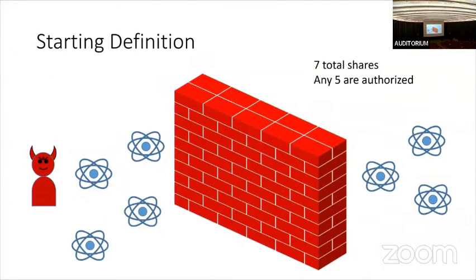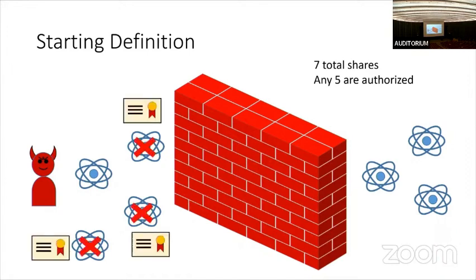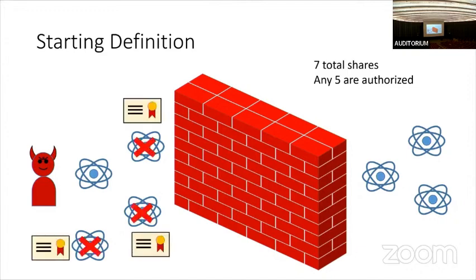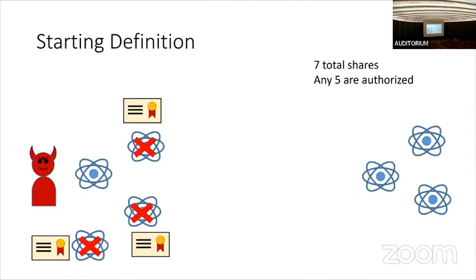Let's see if we can adapt this to the secret sharing setting. We split our secret into some number of shares — say seven shares where any five are authorized and can come together to reconstruct the secret. The left side of the wall is similar to the ciphertext and the right side, inaccessible to the adversary, is similar to the key. The adversary deletes some of the shares it has access to by producing valid certificates, and if it deletes enough, the wall comes down and it gets access to the rest of the shares.